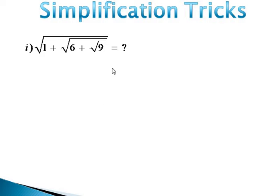First step, we find the last square root, which is 9. The square root of 9 is 3. So now we have square root of 6 plus 3, which gives us square root of 9.